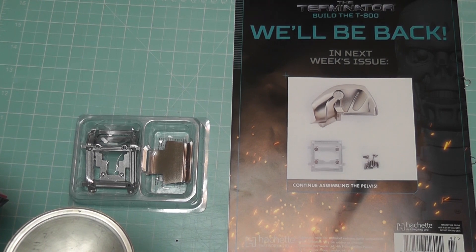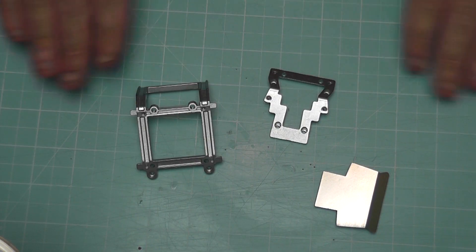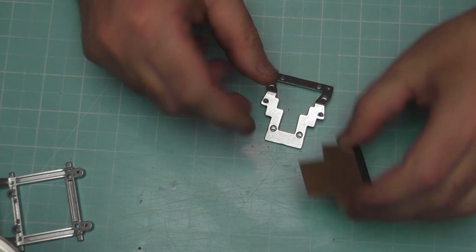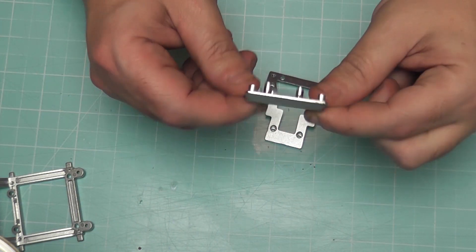With the parts out of the package, this is what you should have: these three parts here. We're going to put this one to the side for the moment and we're going to be working with these two here. This one is plastic and this one is metal.